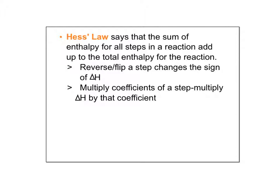Hess's Law says that the sum of the enthalpy for all the steps in a reaction add up to the total enthalpy for the overall reaction. Just so you know, for the steps, if you reverse or flip a step like we did in the last problem, that changes the sign of delta H. So if you had a positive delta H, it becomes negative. If you multiply the coefficients, so say like you double everything in one of the steps, so now instead of 1 and 1 and 1, it's 2, 2, 2, or 2, 4, 6, whatever you started with, you're going to multiply whatever you do to all of the coefficients in the equation, you're going to multiply the delta H for that step by that coefficient.